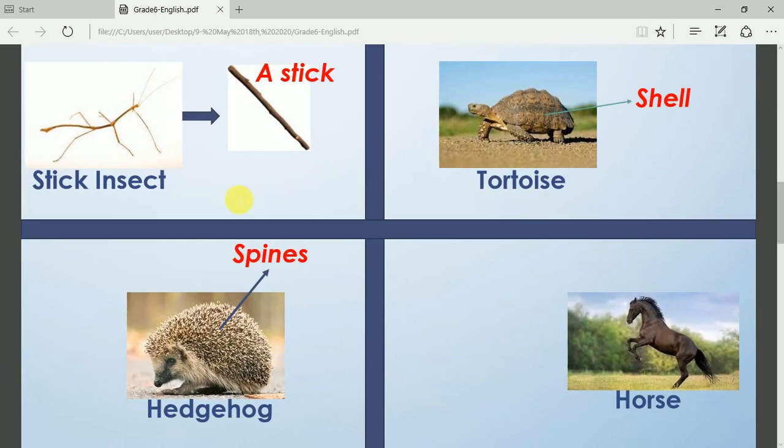This is what we call a stick insect. Why do we call it a stick insect? Because it looks like a stick. This is a stick, so it's called a stick insect.